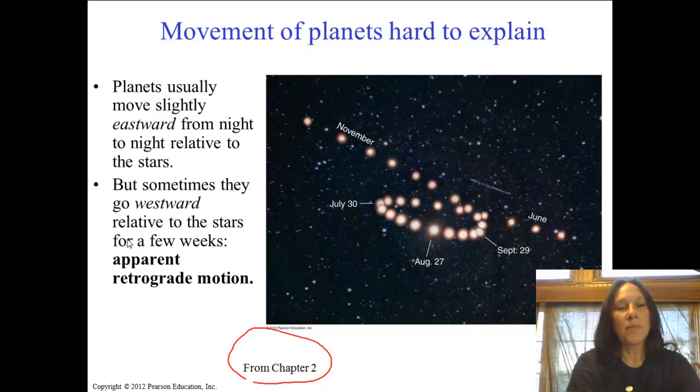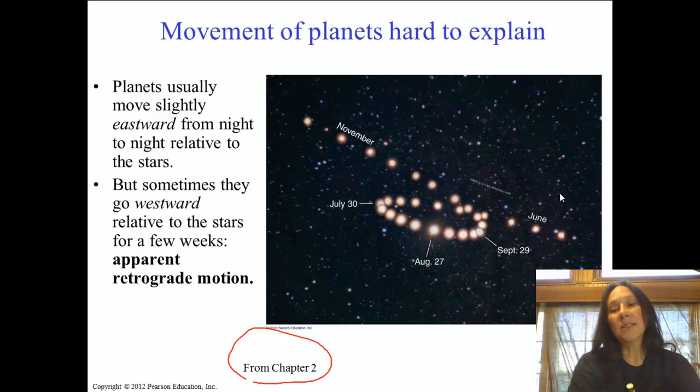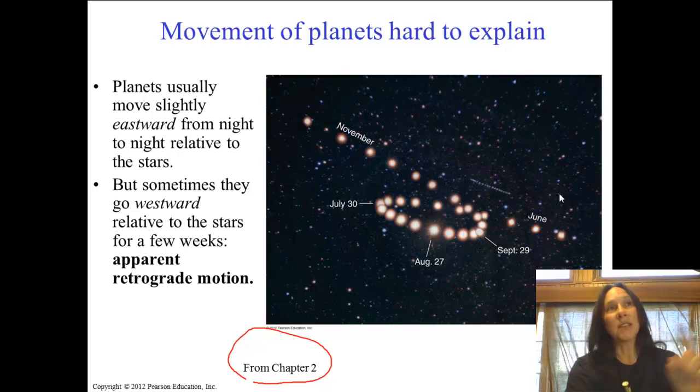The planets don't always go the same motion. This is actually Mars against the background stars from June to November, several months. And this motion right here of Mars against the background stars actually is what we call direct. I'll put a D for direct—direct or regular motion.